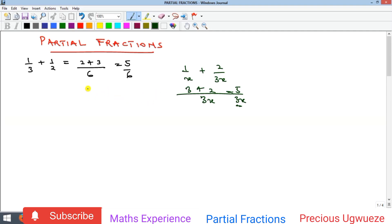If we split this, we will get 1 over 3 plus 1 over 2. These two are partial fractions of 5 over 6. Also, 1 over x and 2 over 3x are partial fractions of 5 over 3x.